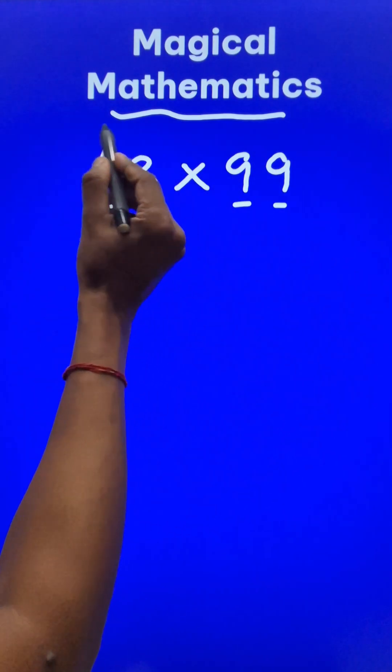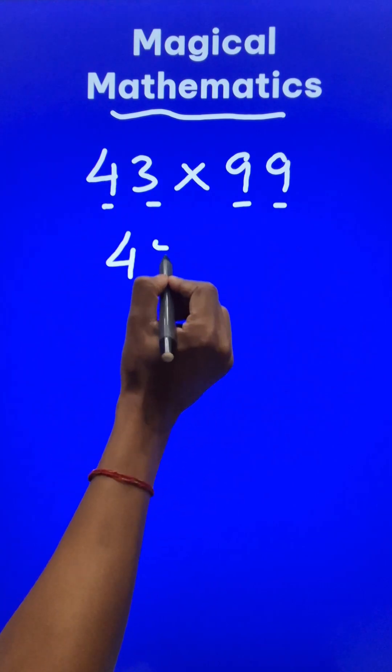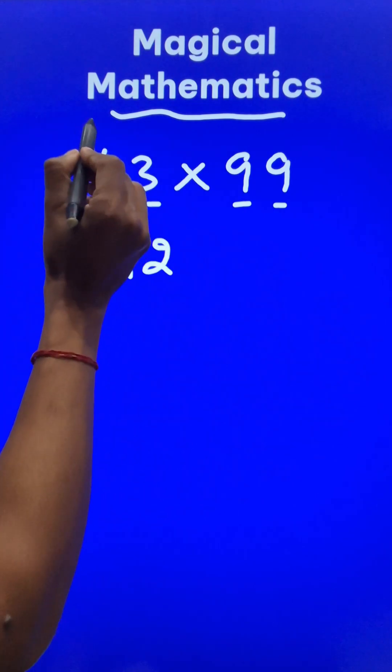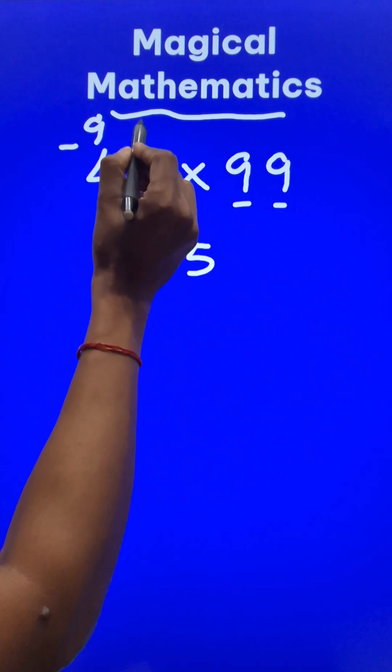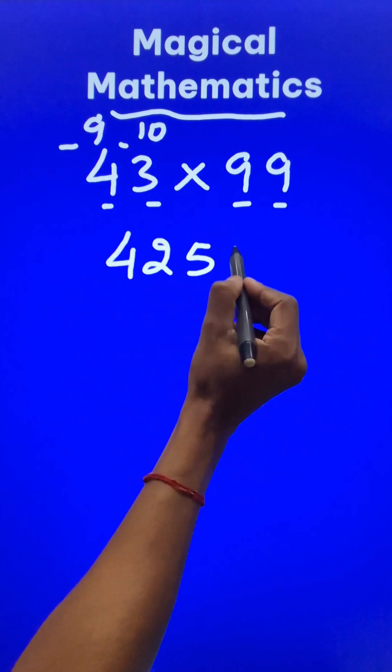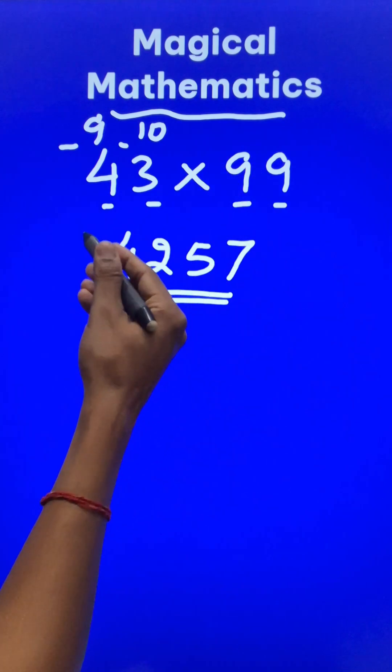It's very simple. 43 when reduced by 1 becomes 42. The first digit is subtracted from 9, so 9 minus 4 is 5. The last digit is subtracted from 10, so 10 minus 3 is 7. 4257 is the product. Likewise,